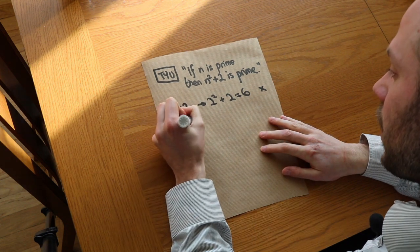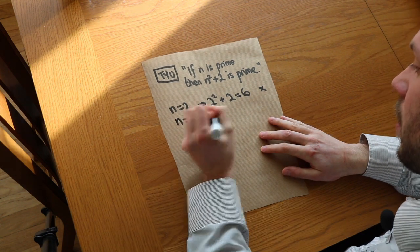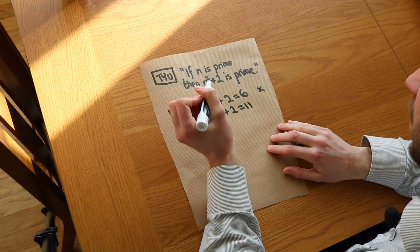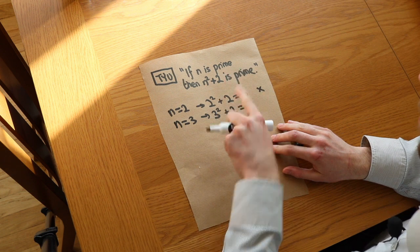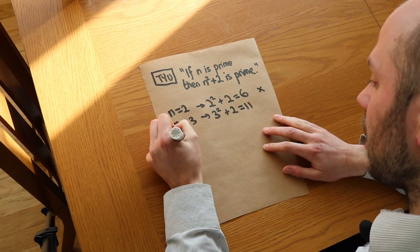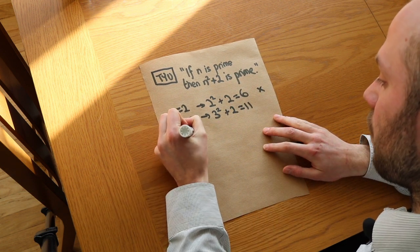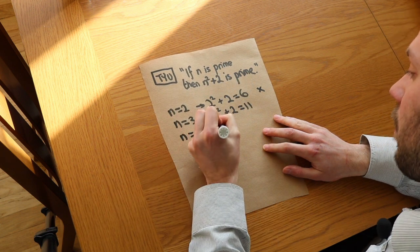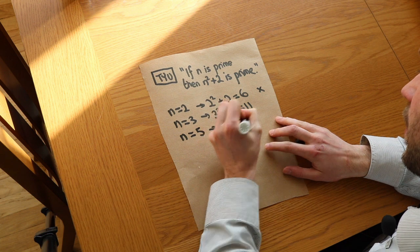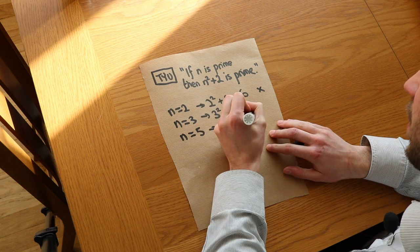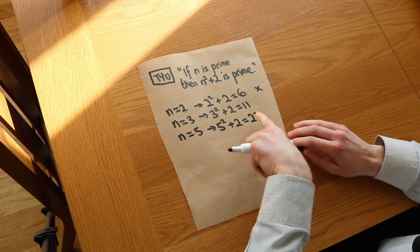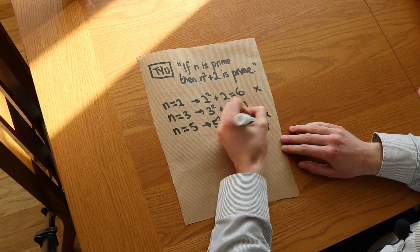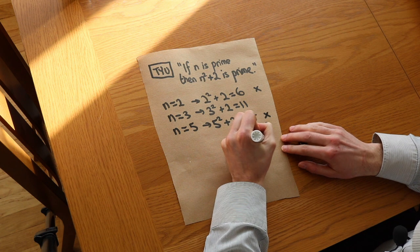For example, n equals 3: 3 squared plus 2 is 11, which is prime — so that's not a counterexample. We can't try n equals 4 because 4 is not prime, making it irrelevant. But n equals 5: 5 squared plus 2 is 27, which is not prime — so that's another counterexample. The values that give non-prime results are the counterexamples.